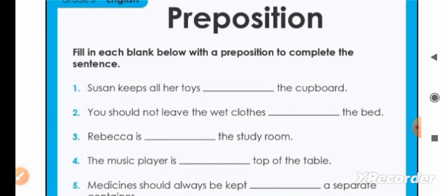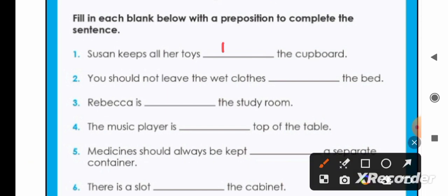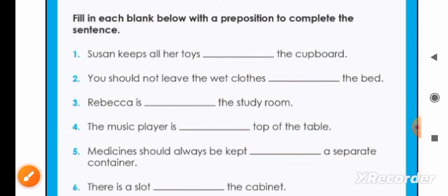Now see the third one. Fill in each blank below with the preposition to complete the sentence. Susan keeps all her toys in the cupboard, it will be in in the first sentence. Second, you should not leave the wet clothes on the bed. Rebecca is in the study room. The music player is on top of the table. Medicine should always be kept in a separate container.